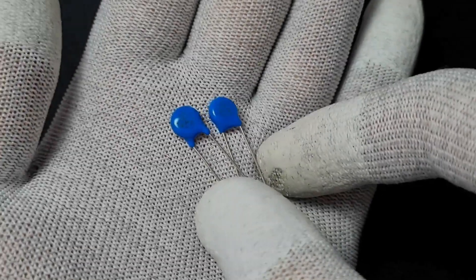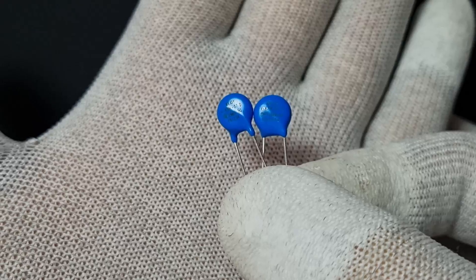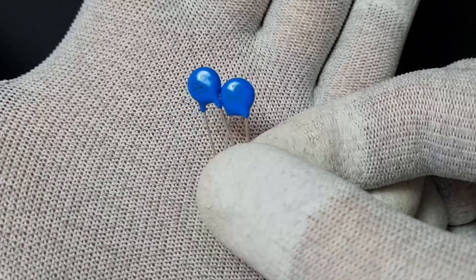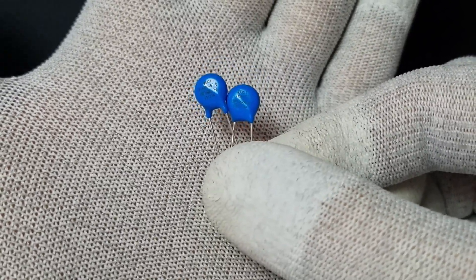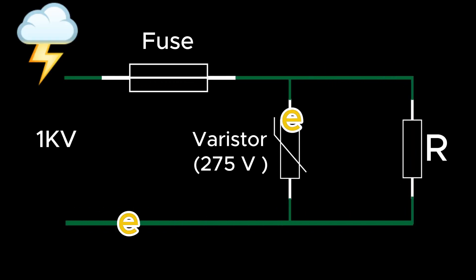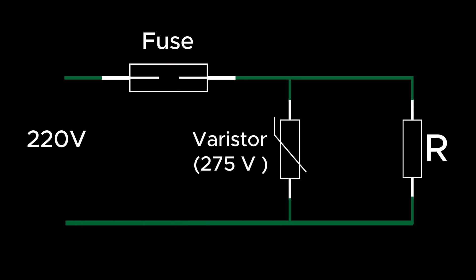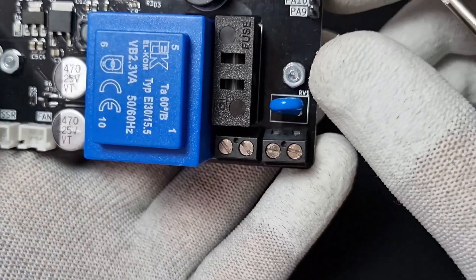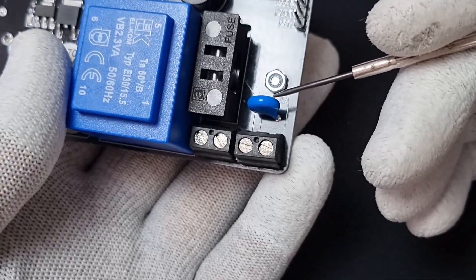Next we have metal oxide varistors. These are commonly used on the input side of circuits. MOVs have a specific threshold voltage. For example, this one is rated at 275 volts. Below that voltage, the MOV has a high resistance and doesn't pass current. But when the voltage exceeds the threshold, the MOV's resistance drops sharply, allowing current to pass through and protecting the circuit from overvoltage. You can find MOVs in almost every power supply, and they are typically connected in parallel with the voltage inputs.